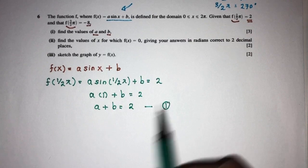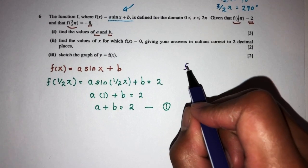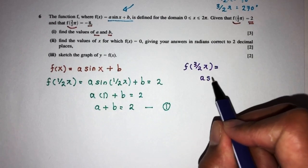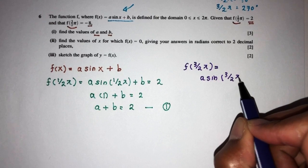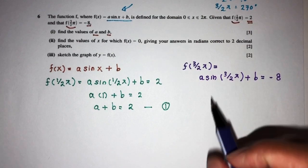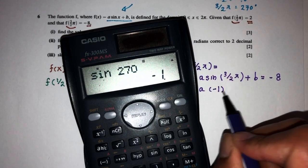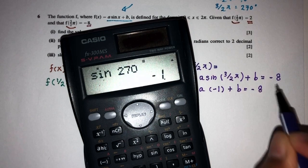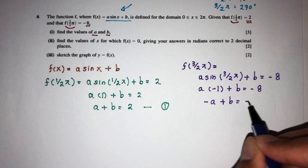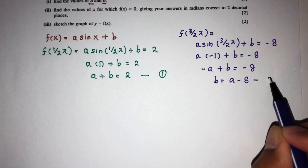Now let's move on to the next given value. We have f of 3 over 2 pi equals minus 8. Same steps: a sine of 3 over 2 pi plus b equals minus 8. Sine of 270 is minus 1, so we have minus a plus b equals minus 8. Making b the subject: b equals a minus 8. That is equation 2.